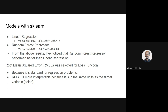Then I did a feature importance analysis after building the random forest model. As you can see, the 'open' column from the dataset has the highest impact because if the store is closed, there are no sales — which makes sense. The second most important feature is competition distance, followed by store type, promo, and competition open date.